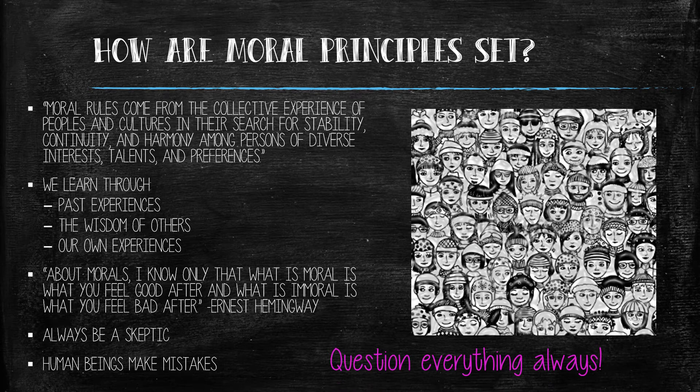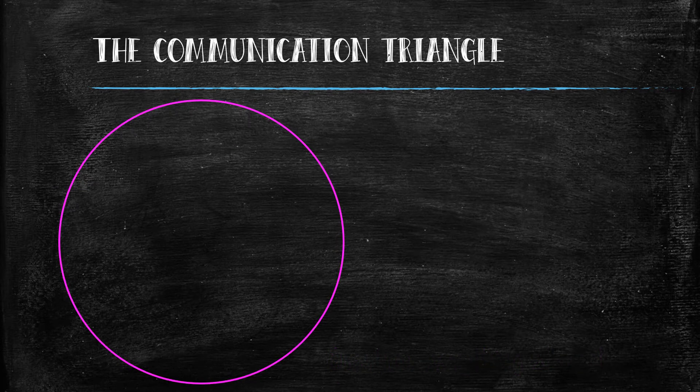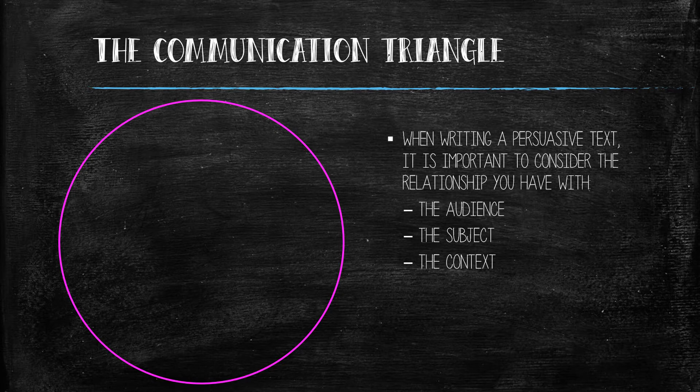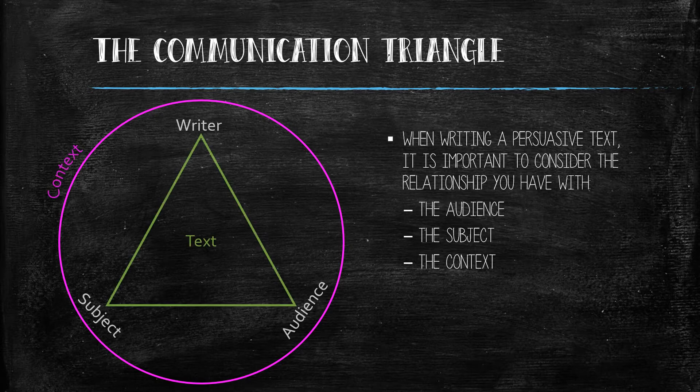Question everything always. Now that we know a little bit more about ethics and how they are set, let's talk about how we can apply this idea to argumentative writing. When writing a persuasive text, it is important to consider the relationship you have with the audience, the subject, and the context in which it can be placed. This can be visualized as what is often referred to by scholars as the communication triangle.